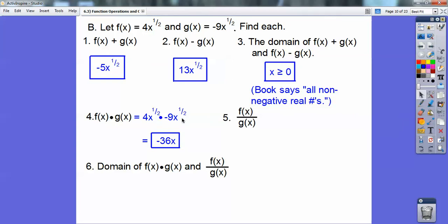x to the 1 half times x to the 1 half is x to the 1 half plus 1 half, which is x to the 1, or just x. So it's negative 36x.